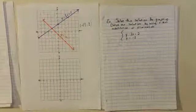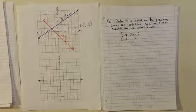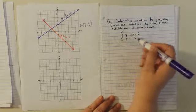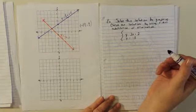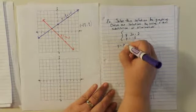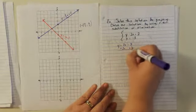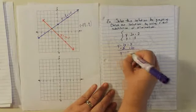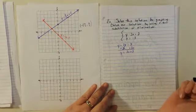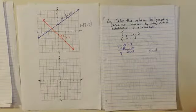Let's try another one: solve this system by graphing and check the solution using substitution or elimination. Our equations are y minus 2x equals 2 and y equals negative 3. We'll start by preparing the equations for graphing. For y minus 2x equals 2, we add 2x to both sides to get y equals 2x plus 2. There's no coefficient for y, so that one's done. And y equals negative 3 already has y by itself, so it's ready.